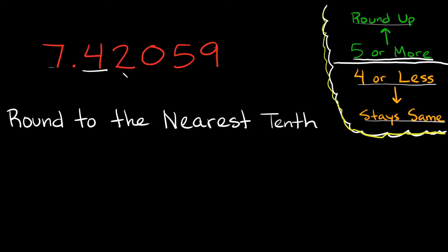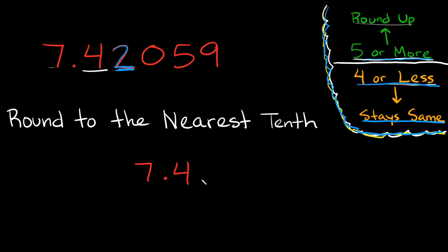How do we know if it's going to stay as four or if we have to round it up to five? We have to look at the number next to it, which is in the hundredths. That's where this rule comes into play. What number do we have here? We have a two. Is that five or more or four or less? It's four or less, because two is smaller than four. So the number in the tenths spot is going to stay the same — this four stays as a four. Our answer would be seven point four.